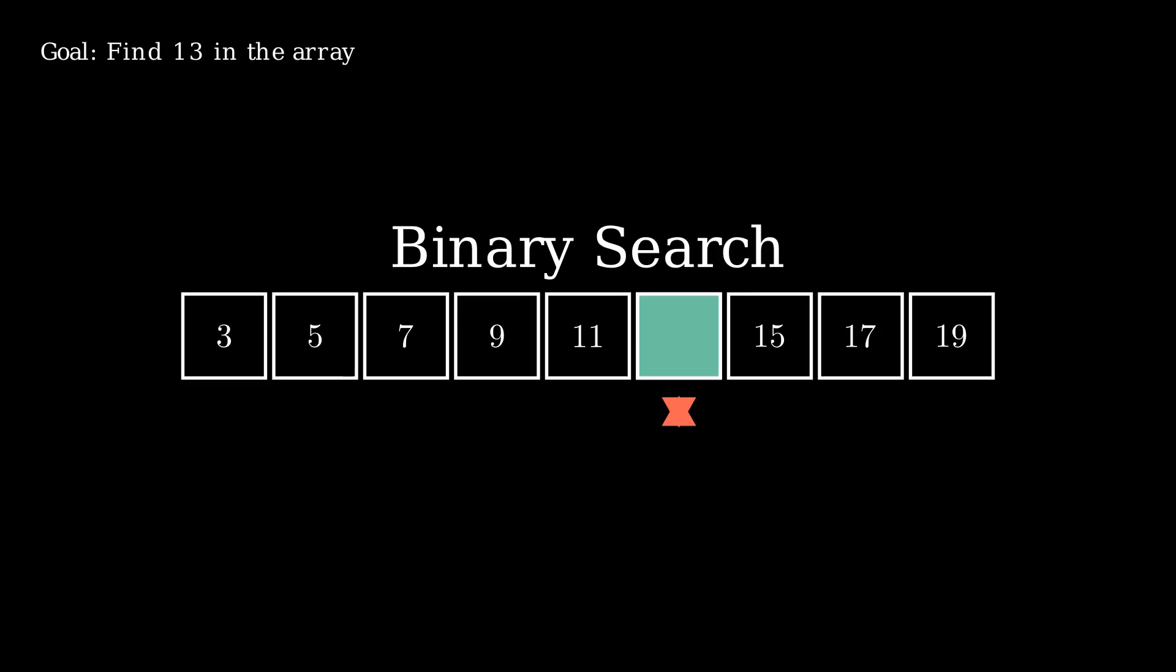When there's only one index between the left and right indices, the search is complete, and we have found the location of our element of interest. Can you figure out what the complexity of this algorithm is? Pause the video again and try to determine the order of the runtime.